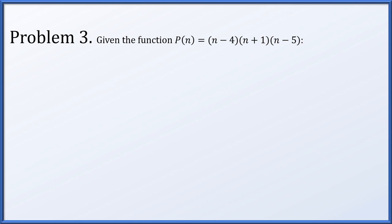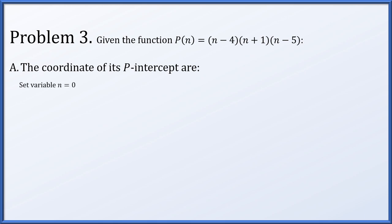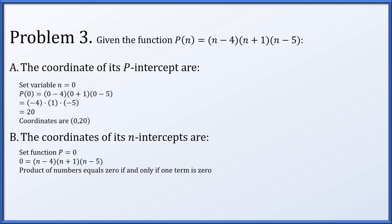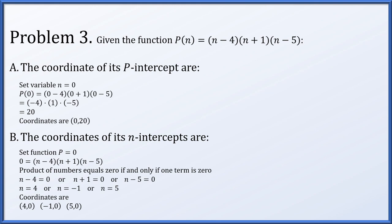Problem three: given p(n) = (n − 4)(n + 1)(n − 5), find the p-intercept by setting n = 0, giving (−4)(1)(−5) = 20, so the coordinates are (0, 20). For the n-intercepts, set p = 0. The product equals zero when one factor equals zero: n − 4 = 0, n + 1 = 0, or n − 5 = 0, giving n = 4, −1, or 5. The n-intercepts are (4, 0), (−1, 0), and (5, 0).